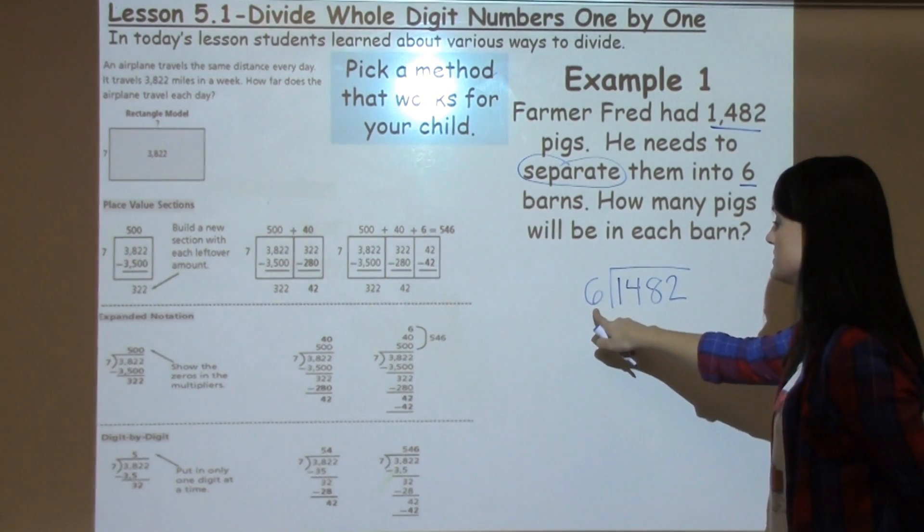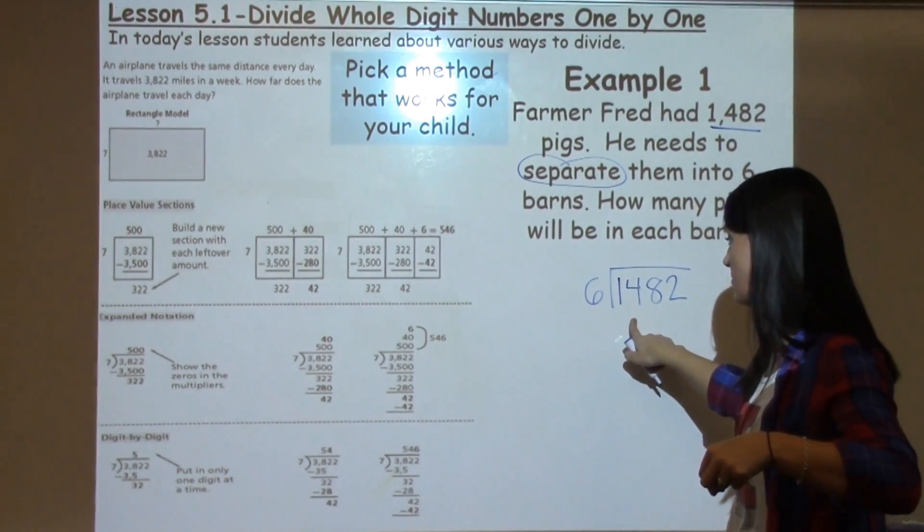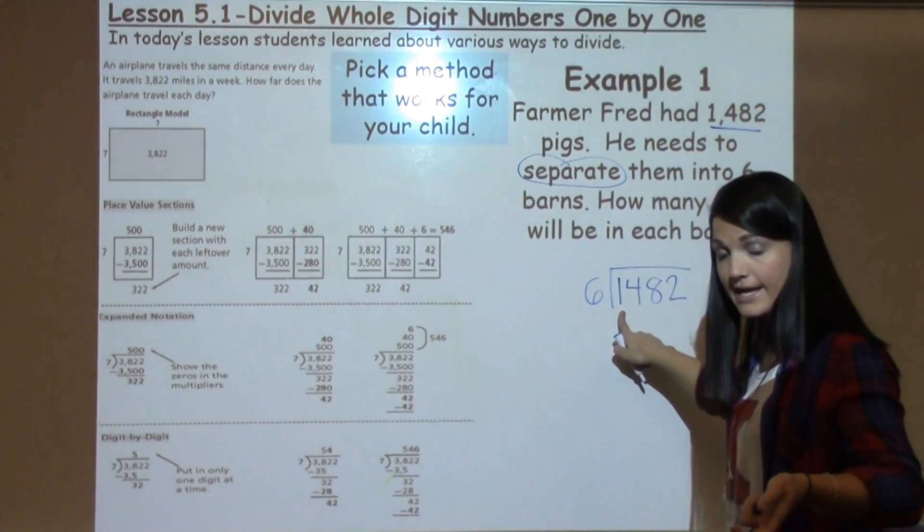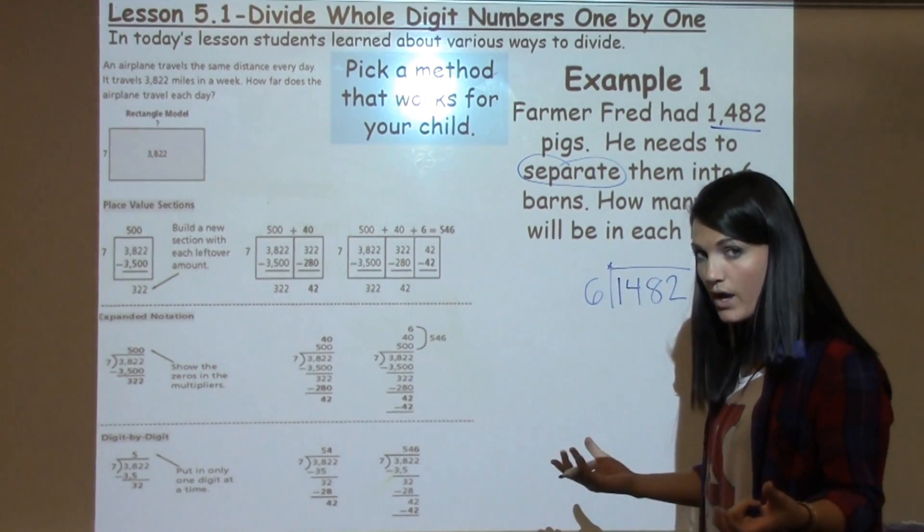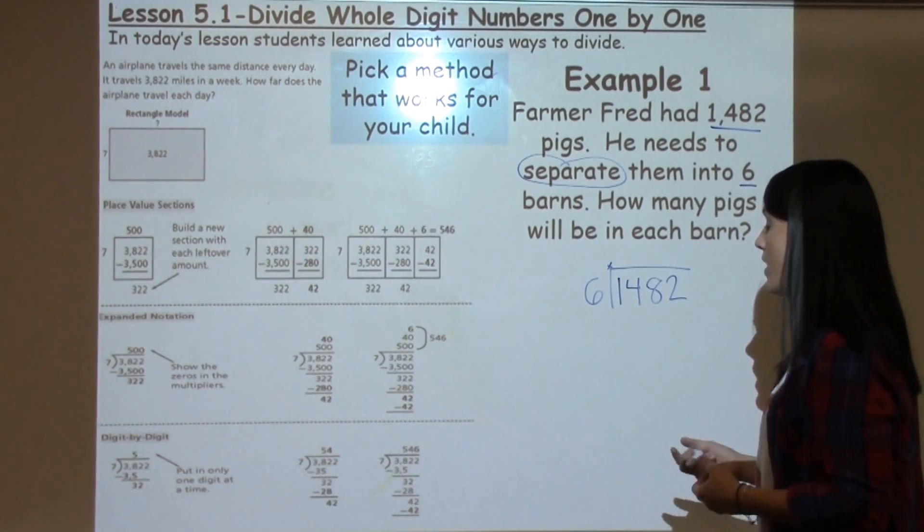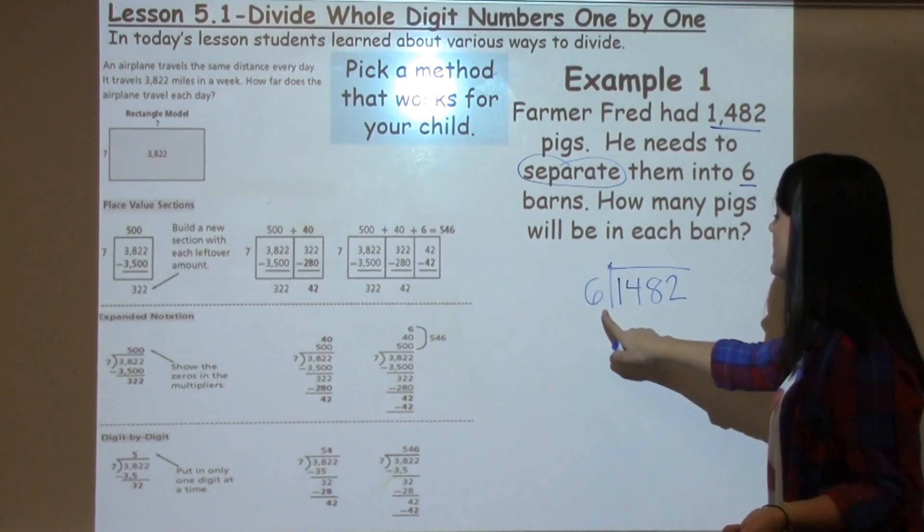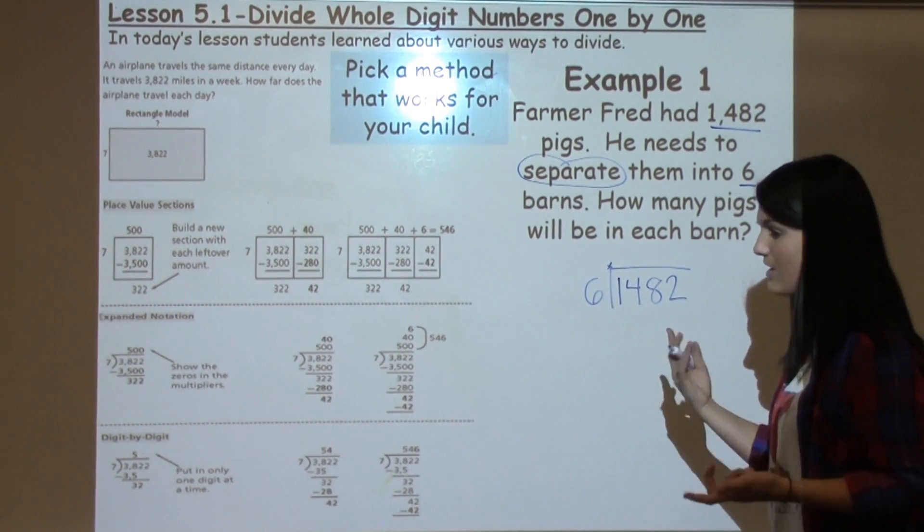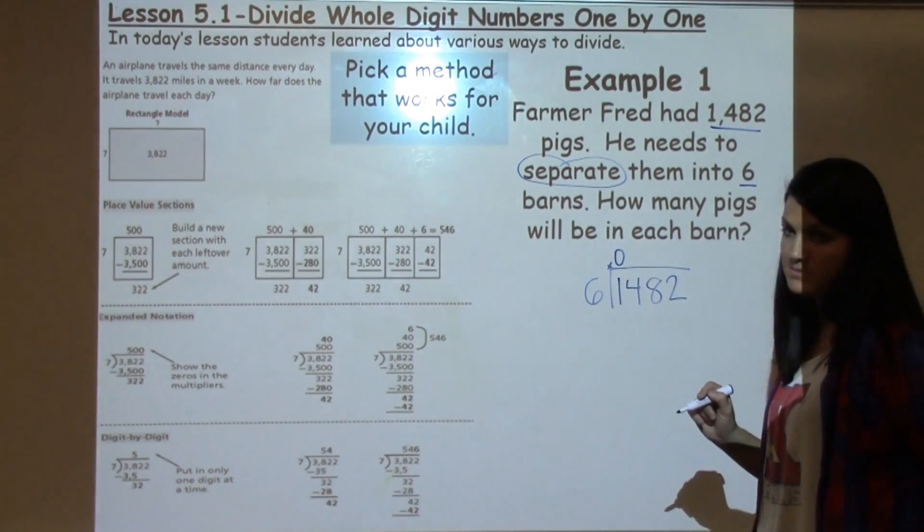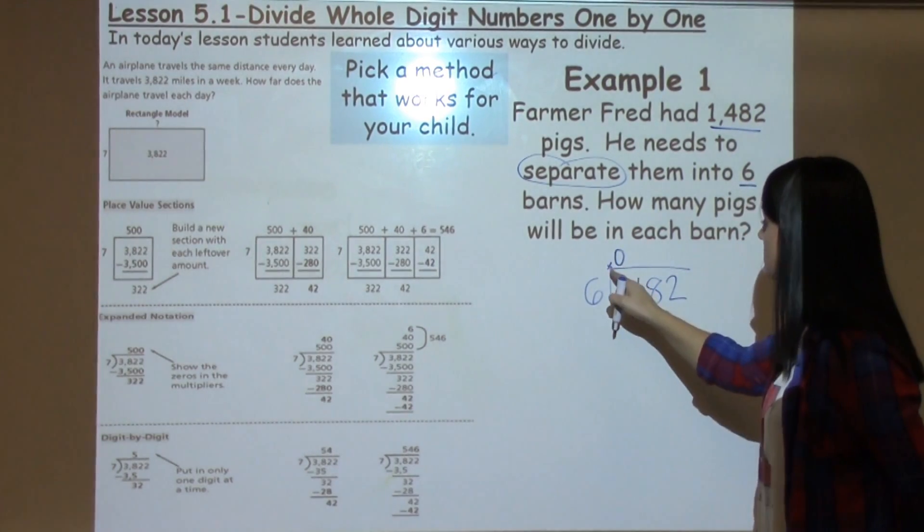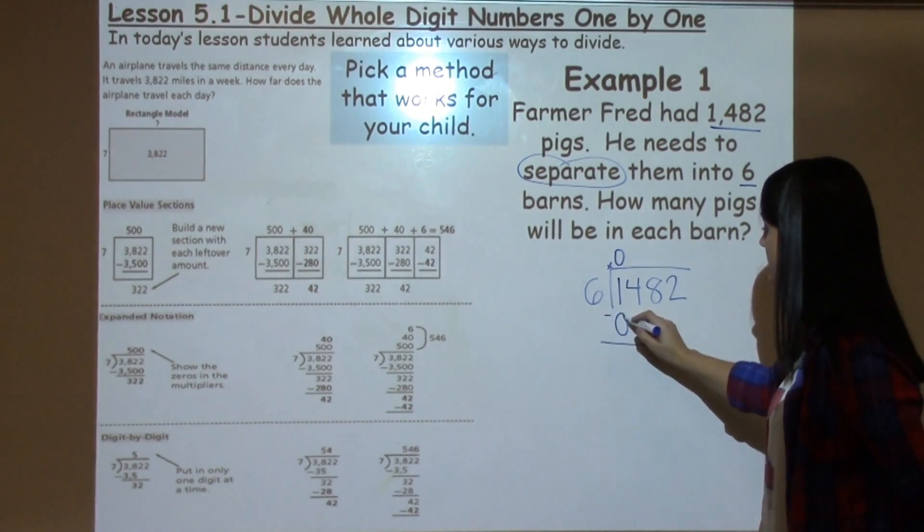So the first thing I'm going to do is say to myself, how many times can 6 go into the first number, which is 1? Or I could think to myself, 6 times what gives me 1 or gets me close? Well, I should see right off the bat that 6 cannot go into 1 because it's too big. There's nothing times 6 that will get me 1 or close because it is too big. So 0 is how many times that it goes in. 0 times 6 is 0, so I place it underneath the 1 and that's when I subtract.